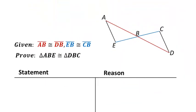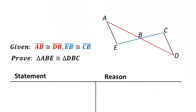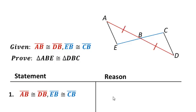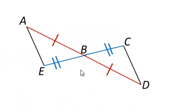Let's take a look at SAS in a proof. Let's say that we're given that AB is congruent to DB and EB is congruent to CB. The first thing we need to do is mark our diagram with that given information. So right now I have two sets of corresponding sides that are congruent, but I want to use side-angle-side. Let's think about what we already know — take a closer look at the angles right in the middle.